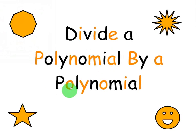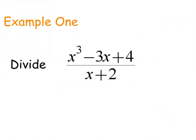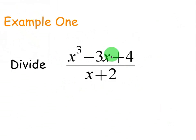We're going to jump right into the first example. It is x cubed minus 3x plus 4, which is a polynomial because the exponents are whole numbers and there's more than one term. The bottom is x plus 2, which is also a polynomial. So I'm going to teach you how to divide the top by the bottom.